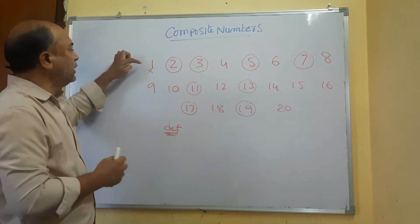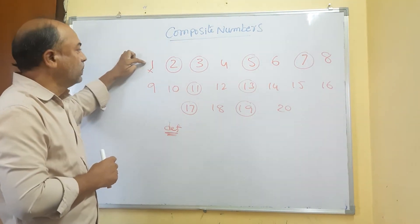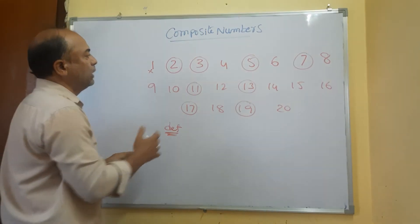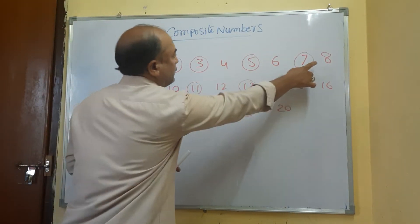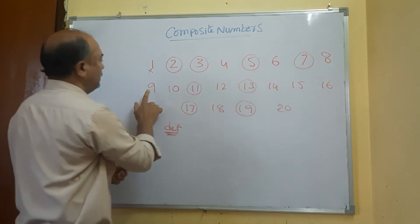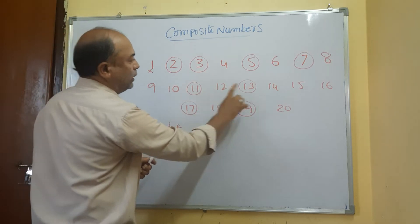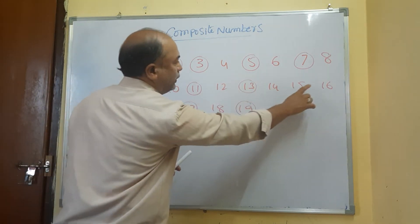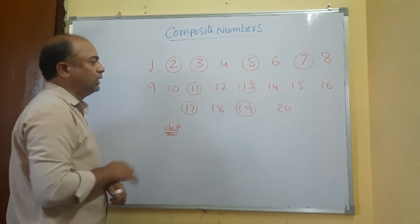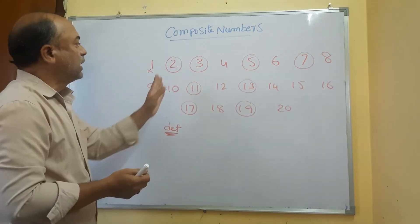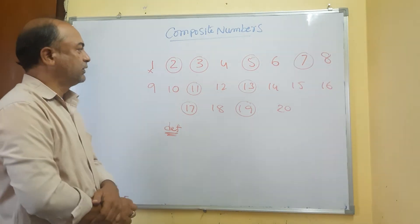The remaining numbers — 4, 6, 8, 9, 10, 12, 14, 15, 16, 18, 20 — these are all composite numbers.